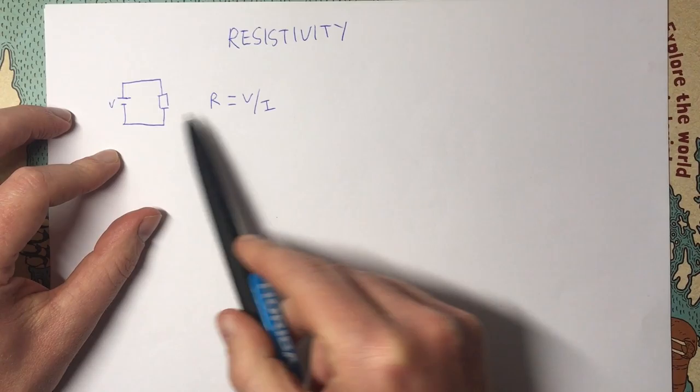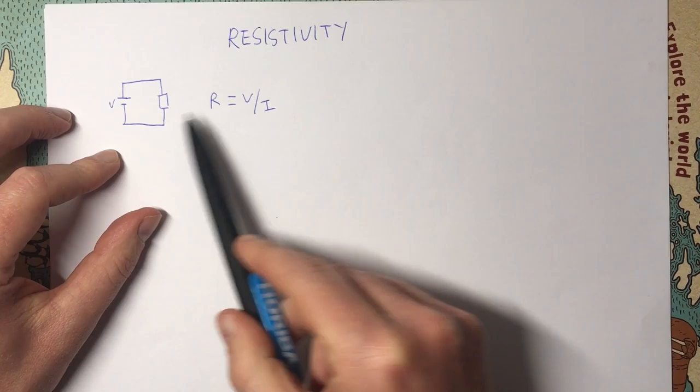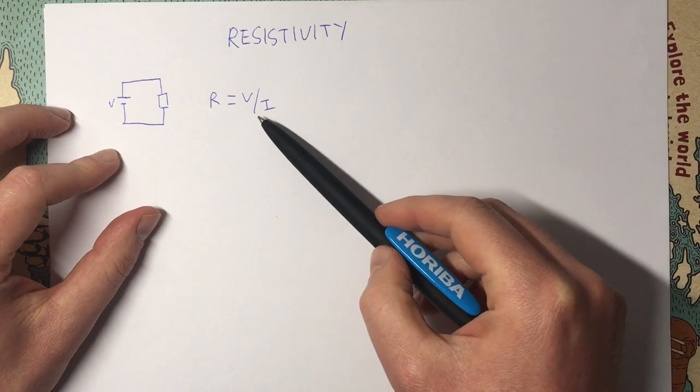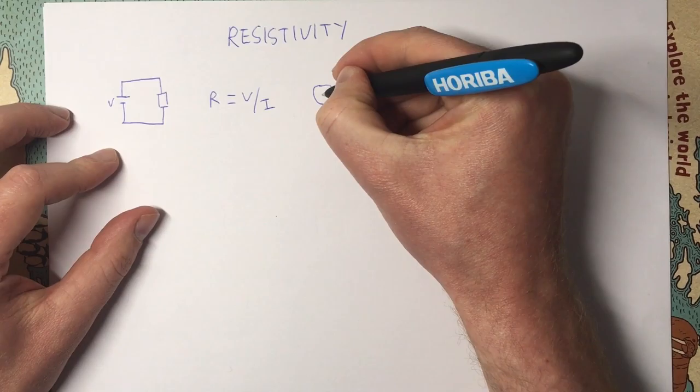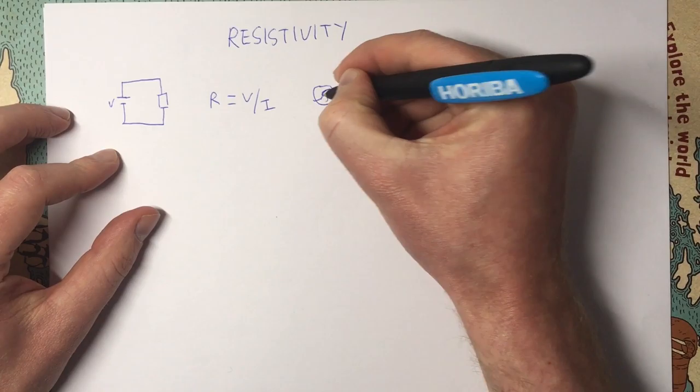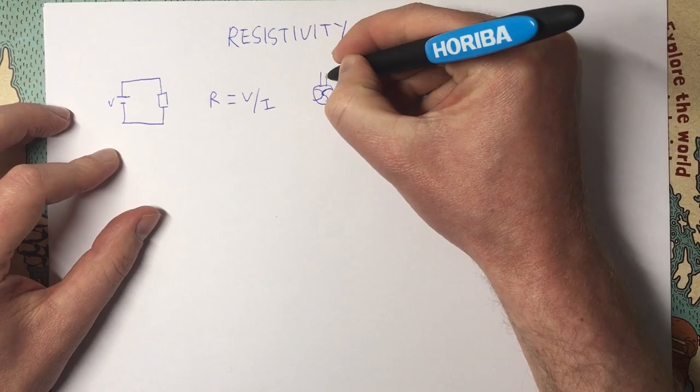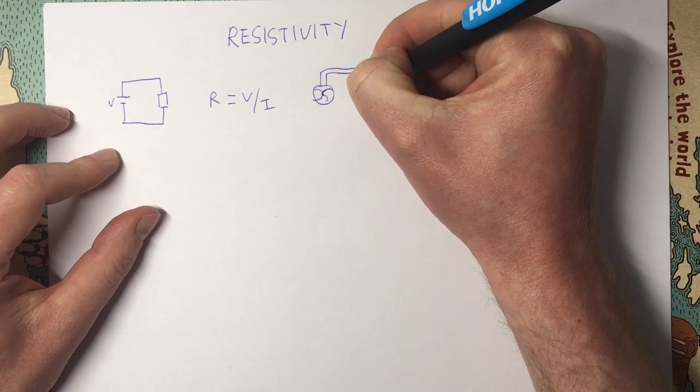Resistance is really just the ratio of how hard we're pushing the electrical current — the voltage we're applying — divided by how much flow rate of current we get. It's nice to think of the analogy of a water circuit. Imagine we have a pump circulating water around a circuit; instead of wires these are water pipes, and our resistor is just a constriction in the flow.